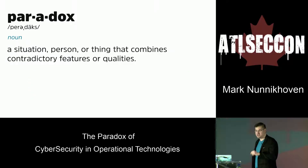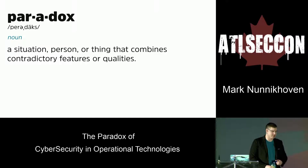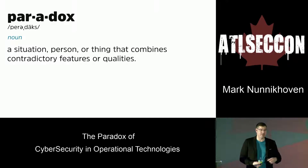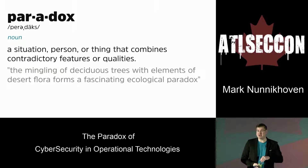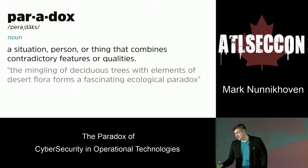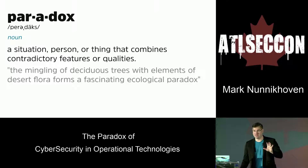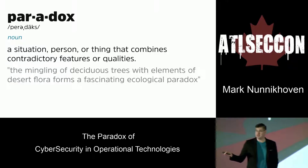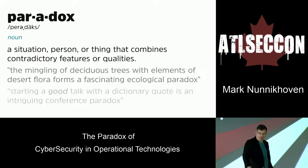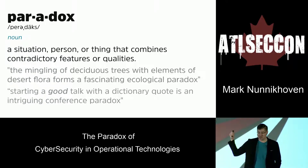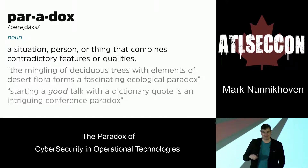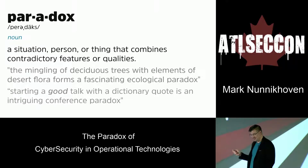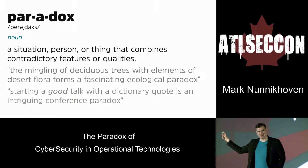The next definition is paradox — a situation, person, or thing that combines contradictory features or qualities. This contains my all-time favorite dictionary definition example: 'The mingling of deciduous trees with elements of desert flora forms a fascinating ecological paradox.' I have no idea why that's the example. The example I would give: starting a good talk with a dictionary definition is an intriguing conference paradox — and hopefully this is still a decent talk even though I did the one thing I promised myself I would never do professionally.